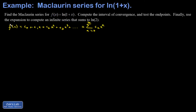I'll post a link to the derivation. The cn's are given by finding the nth derivative of the function we're expanding, evaluated at 0, all divided by n factorial.